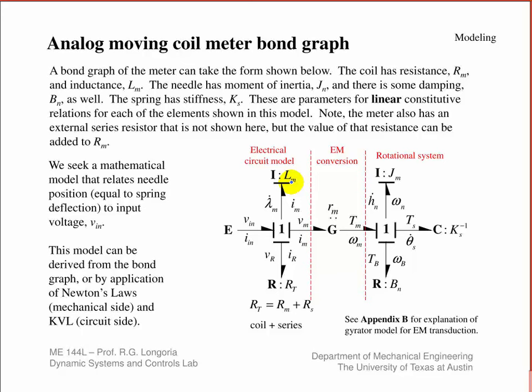It's a nice simple bond graph. Remember, we identify the number of states from the causality on the independent energy storage elements, which is this one, this one, and this one. So we've got a third-order system. The I elements have effort in, and then the C has flow in. So these are three states. The states are identified as the momentum variables on those two, and then the displacement variable on the C.